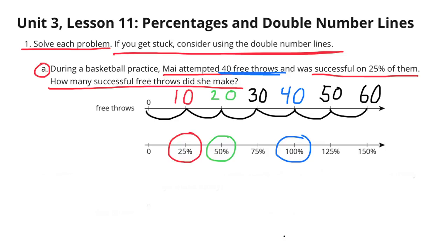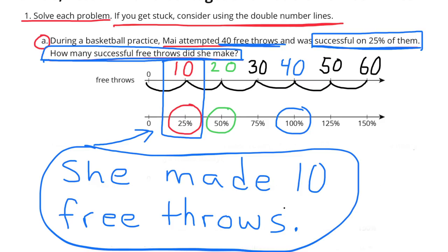So we go 0, 10, 20, 30, 40, 50, 60. If she was successful on 25% of them, then she would have been successful on 10 of her free throws, because 10 is lined up perfectly with 25%. She made 10 free throws.